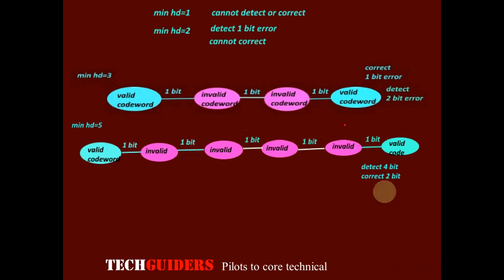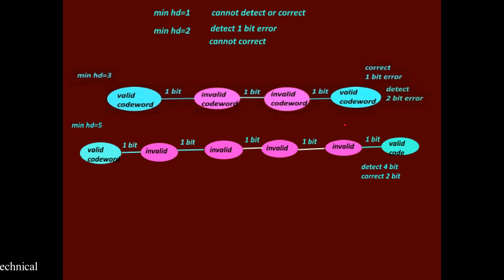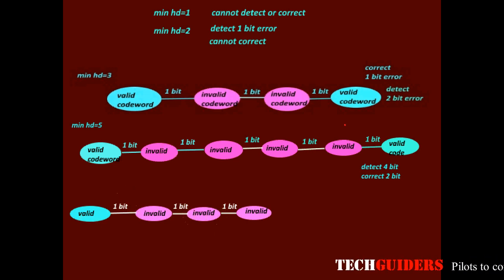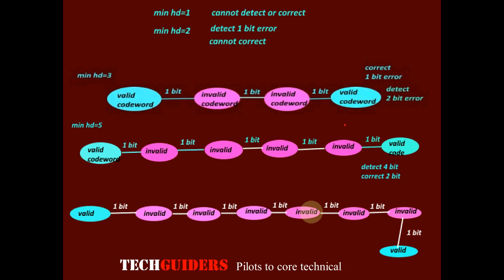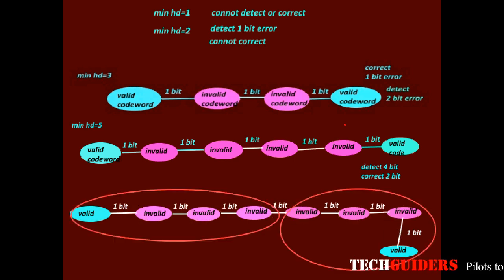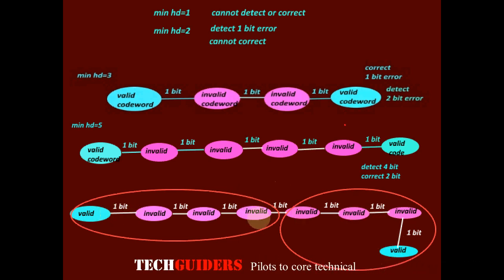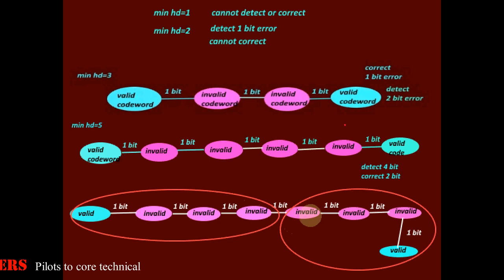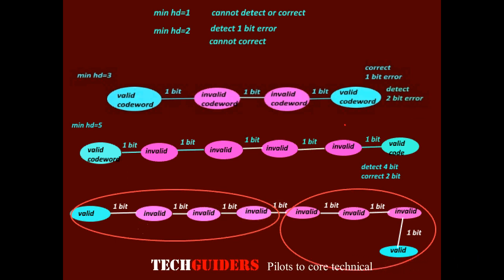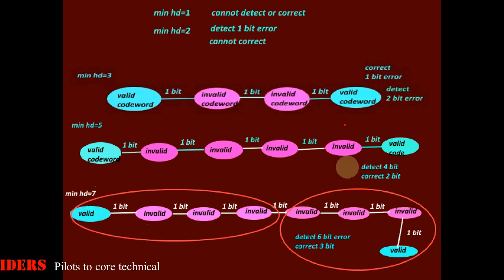Similarly, for 3-bit error correction, the minimum Hamming distance required is 7. The invalid codeword created by a 3-bit error on a valid codeword should not overlap with the invalid codeword from a 3-bit error on another valid codeword. If the Hamming distance is at least 7, even 3-bit invalid codewords do not overlap, and 2-bit and 1-bit invalid codewords also do not overlap. So we can correct 3-bit, 2-bit, and 1-bit errors. Thus, with minimum Hamming distance 7, we can detect up to 6-bit errors.